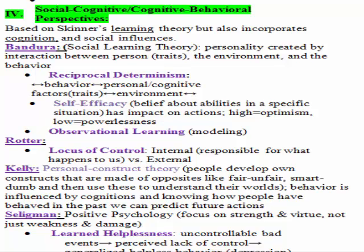Kelly doesn't come up as often, but has shown up in some review books. Kelly's theory is the personal construct theory, which says that people develop their own constructs made of opposites, and that's how they understand the world — things are either fair or unfair, people are either smart or dumb. That's the key component: our behavior is influenced by our cognitions, our thinking.